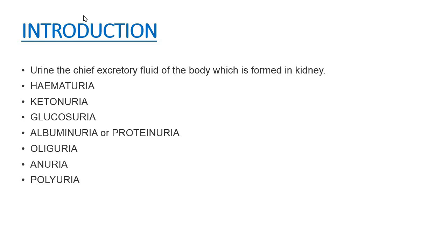The next condition is anuria, which is a condition in which there is no production of urine or there is less than 100 ml production of urine, and it indicates shock or renal failure. Polyuria is a condition in which there is more than 2.5 liters production of urine, indicating diabetes mellitus, diabetes insipidus, or alcohol consumption.